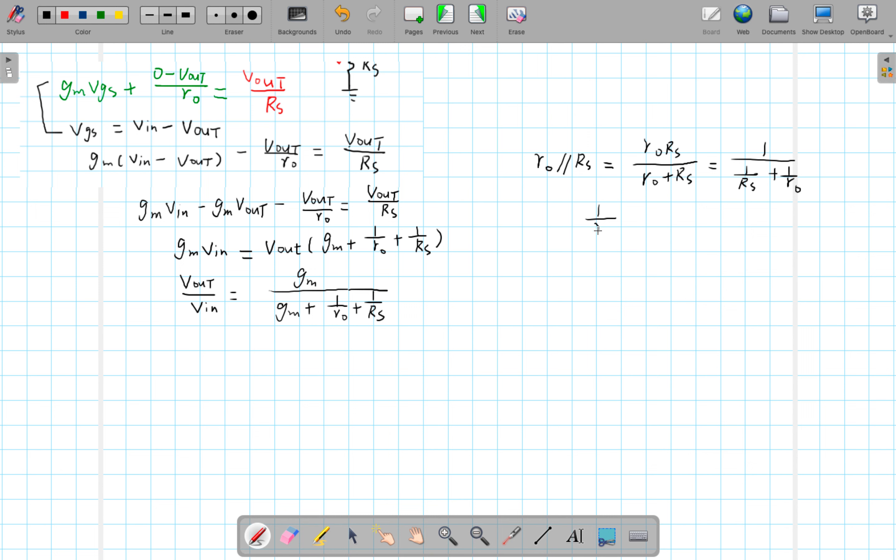That would be equal to 1 over 1 over Rs plus 1 over R0. So 1 over Rs plus 1 over R0 equals to 1 over R0 in parallel with Rs which is precisely this term here. So this can be rewritten as gm over gm plus 1 over R0 in parallel with Rs equals to 1 over 1 plus 1 over gm times R0 in parallel with Rs.